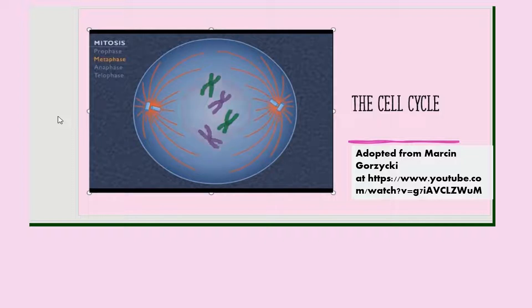During metaphase, the double-stranded chromosomes line up along the equator of the cell. The spindle is now fully formed and the microtubules attach to each sister chromatid.